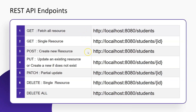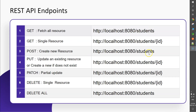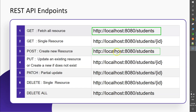Here I've put all the endpoints we're going to discuss. Most of the endpoints look exactly the same, but the difference lies in the HTTP function used. For example, using GET on a given endpoint fetches all resources, using POST on the same endpoint creates a new resource, and using DELETE on that same endpoint deletes all resources.